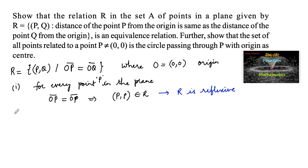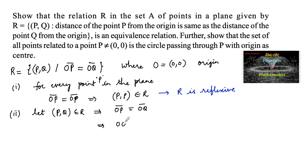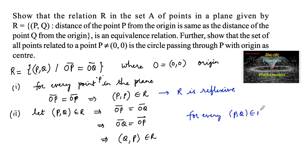Second, for symmetric: let (p, q) belong to R. Then we can say the distance from origin to point P, that is OP, is same as the distance from origin to point Q, that is OQ. This means OQ = OP, which implies (q, p) belongs to R. So for every (p, q) belonging to R, there is (q, p) belonging to R. Hence R is symmetric.